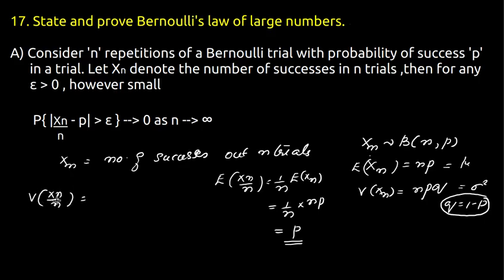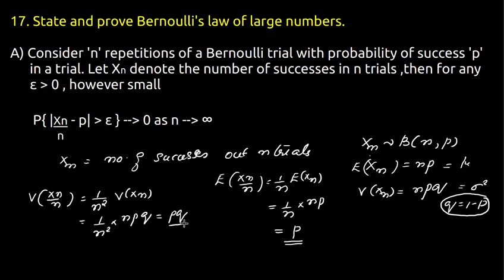The variance of XN/n is (1/n²) times the variance of XN, which equals (1/n²) times npq, giving pq/n. So the random variable XN/n has mean p and variance sigma squared equal to pq/n.